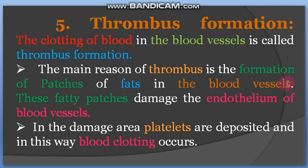Fatty patches in blood vessels damage the endothelium — the delicate internal layer of the blood vessel made of endothelium cells. Once damaged, platelets are deposited at the damaged area, and in this way blood clotting occurs, which is called thrombus formation.